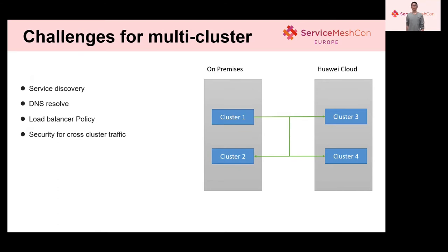Let's see the second part — the challenges for multi-cluster. There are four points listed here. The first one is service discovery. For native Kubernetes, there is no way to do service discovery for remote clusters — we have to make use of external service registries. For example, in the picture on the right, the cluster one clients cannot discover services from other clusters. The second one is DNS resolve.